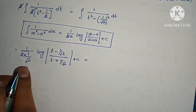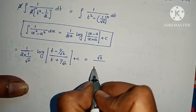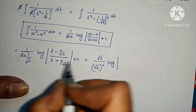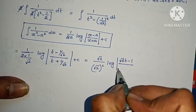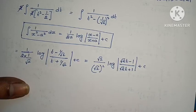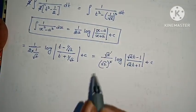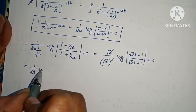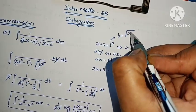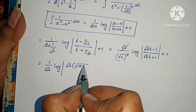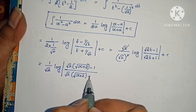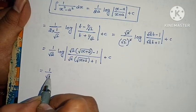Applying the formula with a equals 1 by root 2, we get 1 by (2 times 1/√2) times log mod (t minus 1/√2) by (t plus 1/√2) plus c, which simplifies to 1 by root 2 times log mod of the expression plus c.